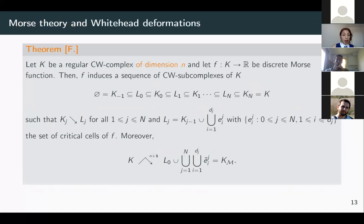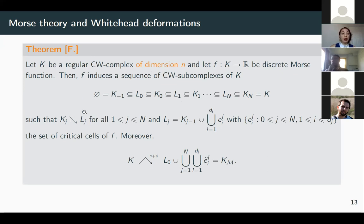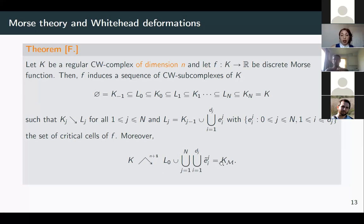Putting it all together, we have a new statement of the main theorem of discrete Morse theory: given a CW complex of dimension n and a discrete Morse function, the function induces a sequence of subcomplexes with either collapses or attachments of critical cells. We have proved that under this situation, there is an n+1 deformation from the original complex to the Morse complex — a reconstruction including the attaching maps.